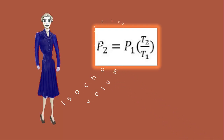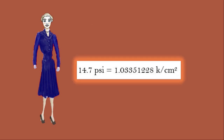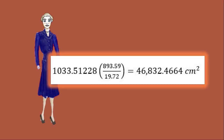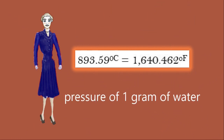The professor is using the isochoric equation for the constant volume of the chamber and solving for P2 pressure — that is, P2 equals P1 times T2 divided by T1. Using kilograms per square centimeter: 14.7 PSI equals 1.03351228 kilograms per square centimeter. So 893.59 divided by 19.72 degrees Celsius, then times 1033.51228, equals 46,832.4664 grams per square centimeter — the pressure of 1 gram of water vapor at 893.59 degrees Celsius or 16,040.462 degrees Fahrenheit.